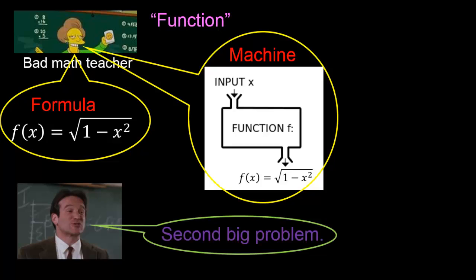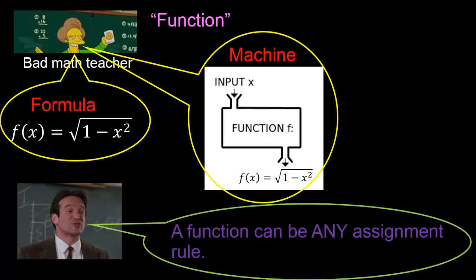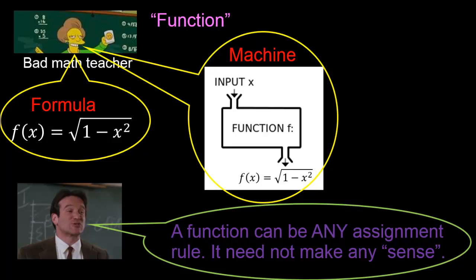We are now going to talk about the second big problem with thinking of functions as formulas or machines. A function can be any assignment rule — in particular, it doesn't need to make any sense whatsoever. In contrast, thinking of functions as formulas or machines tends to give the impression that the function must somehow make some sort of sense. But this is not in fact the case.